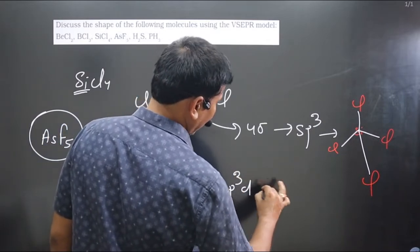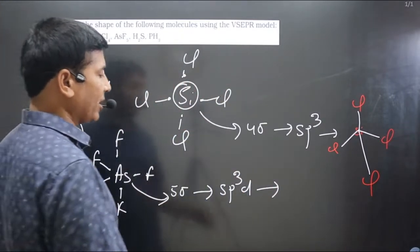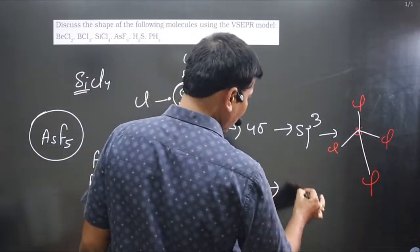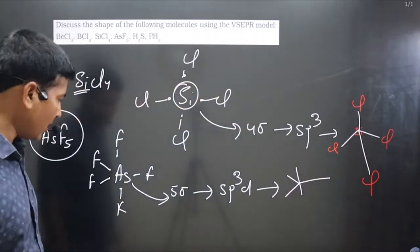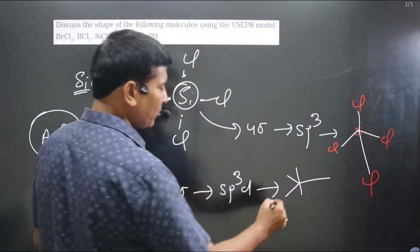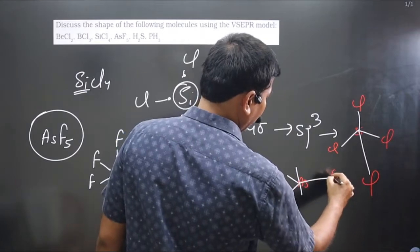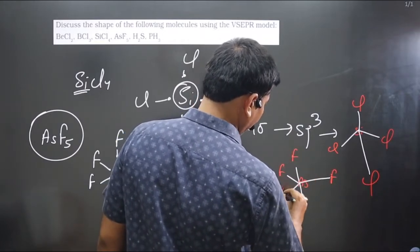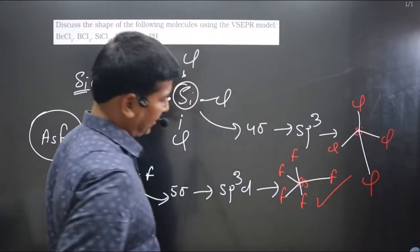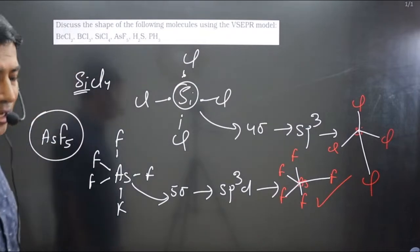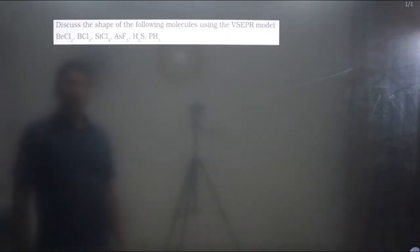We count the sigma bonds: one, two, three, four, five — five sigma bonds. For five sigma bonds, hybridization will be sp3d and the shape we get is trigonal bipyramidal. Arsenic is at the center with fluorine atoms arranged in a trigonal bipyramidal geometry.